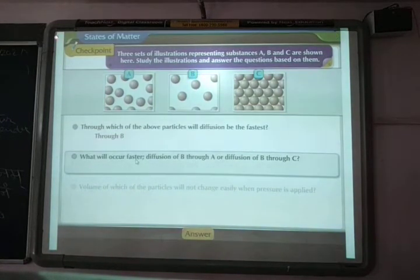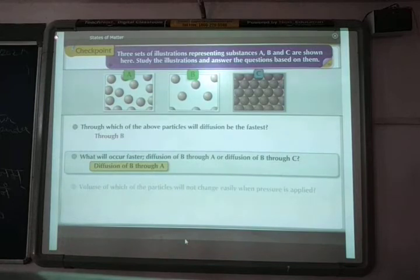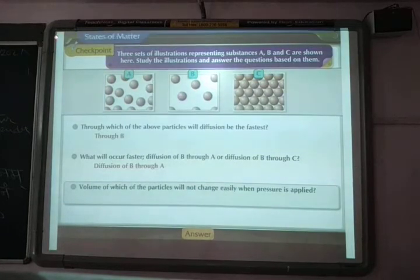Will diffusion of B through A or diffusion of B through C occur faster? B through A is faster because space is more in A than C.